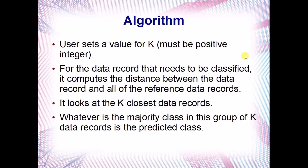The user of the algorithm selects a value for K — it must be a positive integer, so 1, 2, 3, etc. For the data record you want to classify, it computes the distance between that record and all of the reference data records. Then it looks at the K-closest records in the reference data. So if you set K to 5, it'll look at the five closest records. Whatever is the majority classification among those K records is the predicted class.